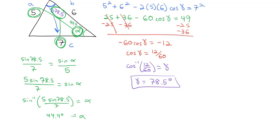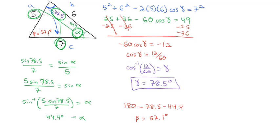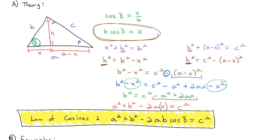So alpha is 44.4 degrees. The only one left is beta: 180 degrees minus 78.5 minus 44.4 gives beta equal to 57.1 degrees. We've solved our triangle, all starting with the Law of Cosines. To summarize: use the Law of Cosines whenever you don't have a side and its opposite angle. If you do have that pair, use the Law of Sines — it's much nicer and quicker. Now it's your turn to try a few of these and let me know if you have any questions.